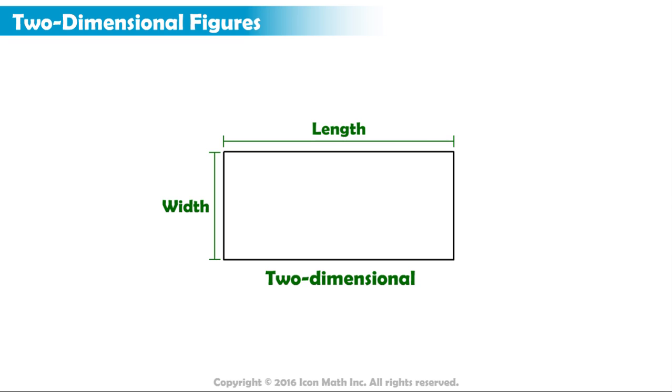When we find the area of a rectangle, we use the formula A equals L times W, or area equals length times width.